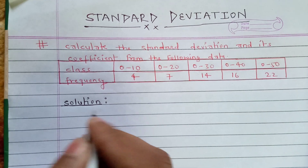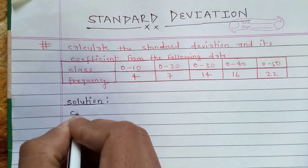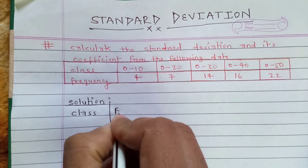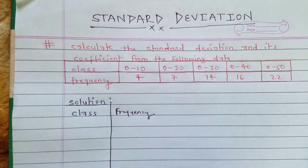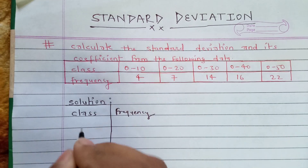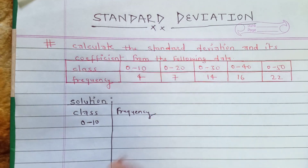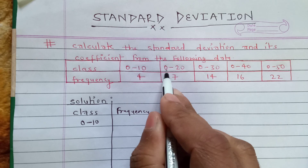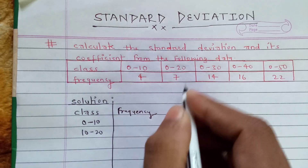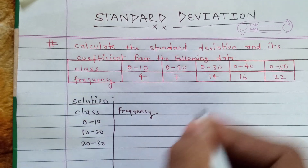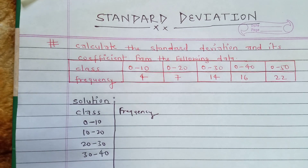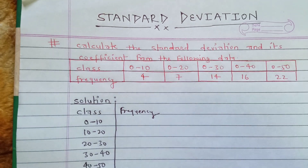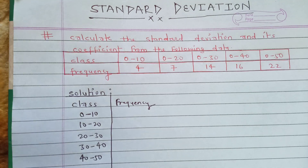Let's write the solution and make a table with class and frequency. If the class is given like 0 to 10, 0 to 20, we are going to arrange this class as 0 to 10, 10 to 20, 20 to 30, 30 to 40, and 40 to 50.